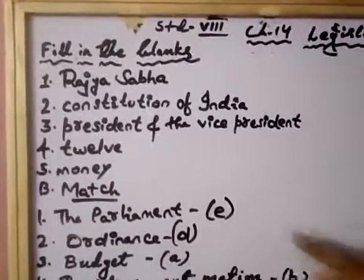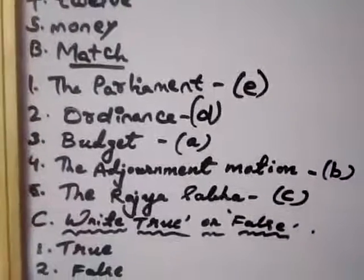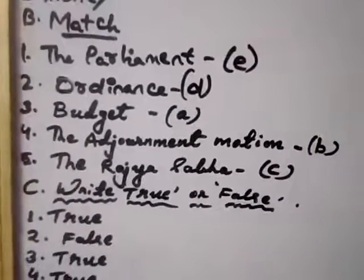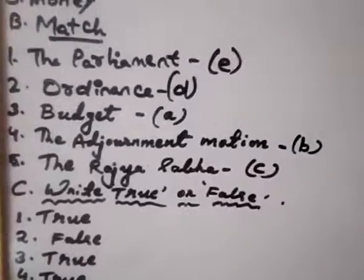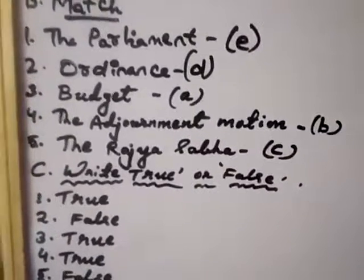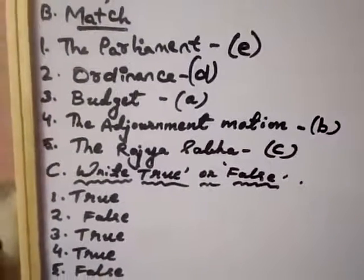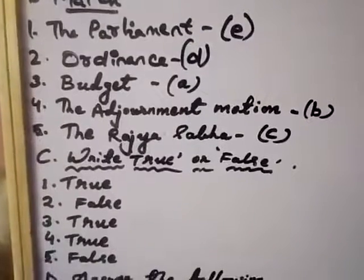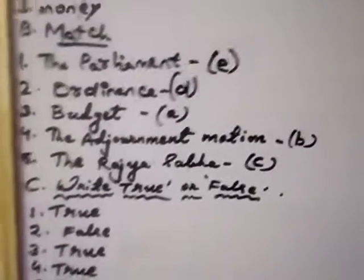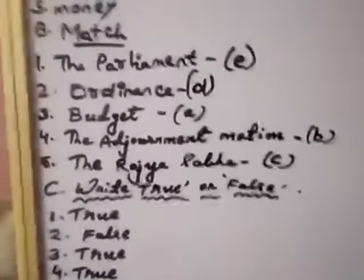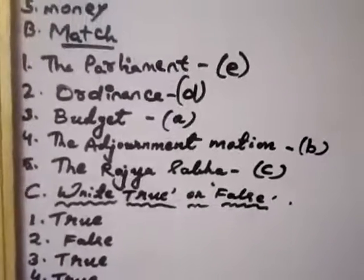Now next, match the following. Number one, parliament is the lawmaking organ. Second, the ordinance is the temporary law. The budget, number three, is the estimate of income and expenditure of the government. Number four, the adjournment motion passes in the Lok Sabha. And the Rajya Sabha is the permanent house.